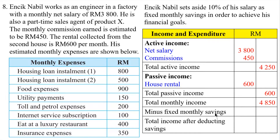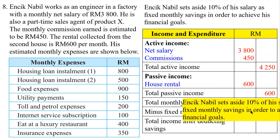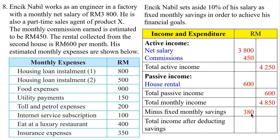The fixed monthly savings is 10% of his salary, which is RM380. So the total income after deducting the savings is RM4,850 minus RM380, which is RM4,470. All the totals are written on the right side.